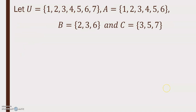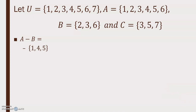Let U = {1, 2, 3, 4, 5, 6, 7}, A = {1, 2, 3, 4, 5, 6}, B = {2, 3, 6}, C = {3, 5, 7}. For A minus B: take away the things from A that are in B — remove 2, 3, and 6 — leaving {1, 4, 5}. For B minus A: take set B and remove elements that are in A; 2, 3, and 6 are all in A, so the solution is the empty set. Note that A minus B does not equal B minus A.